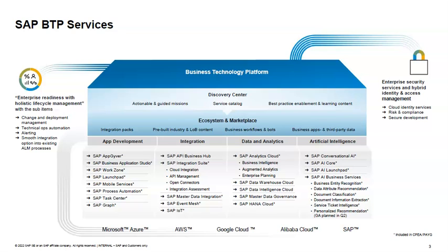For data analytics, we already have a lot in place — Business Intelligence, Augmented Analytics, and Enterprise Planning. We also have Data Warehouse Cloud, Data Intelligence Cloud, Master Data Governance, and SAP HANA Cloud. In artificial intelligence, we have Conversational AI, AI Core, AI Launchpad, and AI Business Services.